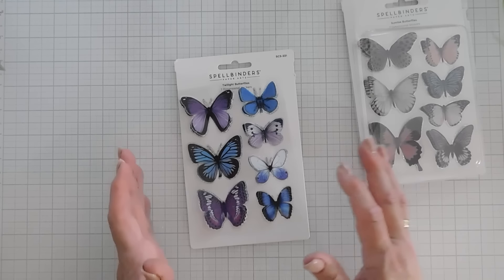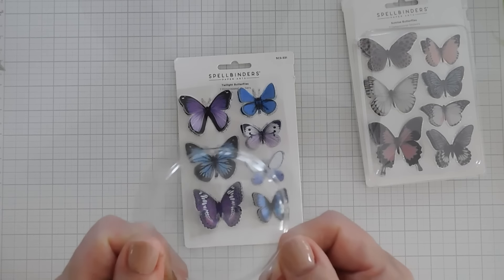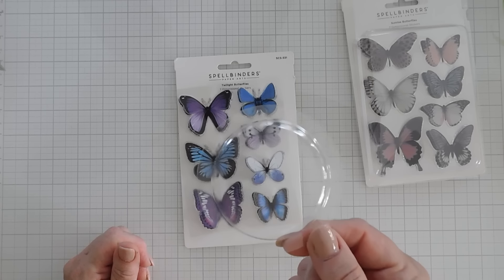Today we're making a not-so-typical shaker card. We're going to create a shaker card with a butterfly in it and we're using some new stickers from Spellbinders.